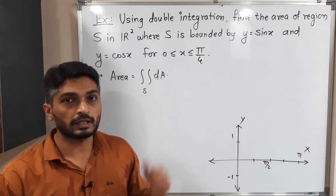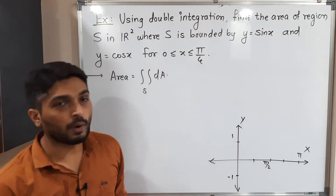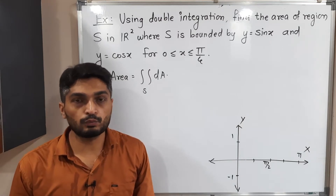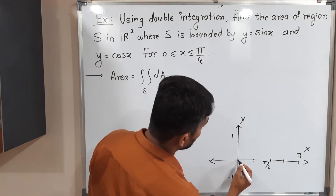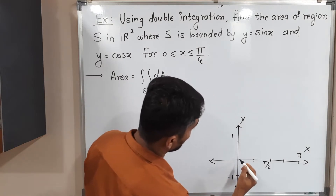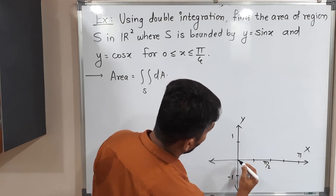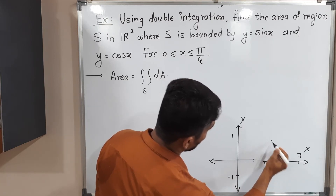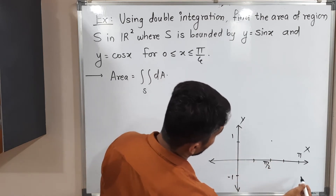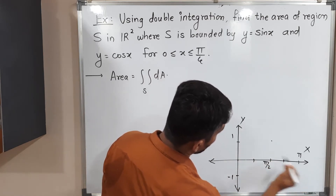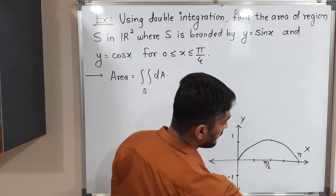The important thing is to find the region S. S is bounded by y = sin x. We are familiar with the sine curve, so let me draw it. The sine curve starts at (0, 0), reaches value 1 at π/2, and passes through 0 again at π.